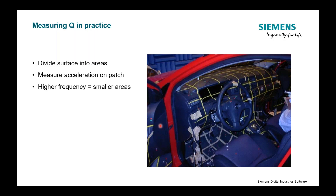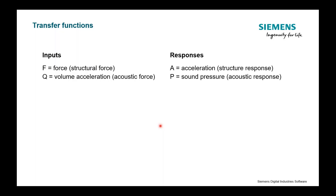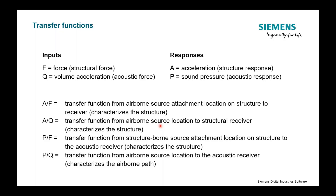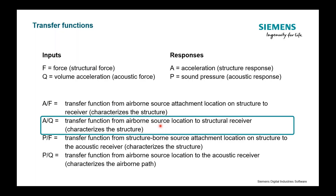This is how we measure an operating Q. However, if we have a Q source, our inputs are forces and acoustic forces or Q, and our responses are acceleration and sound pressure — A's and P's. Using these four letters for our two inputs and two outputs, we can come up with four different types of transfer functions: A over F — acceleration per unit force, typical impact hammer or shaker measurement. You could also have an A over Q, where I'm measuring the acceleration on a structure due to an acoustic force — that interaction between a sound source sending sound waves out and causing the structure to shake, measuring that airborne/structure-borne interaction.